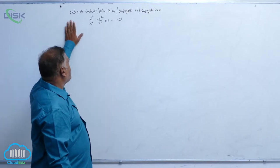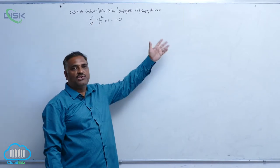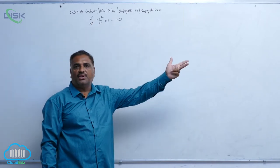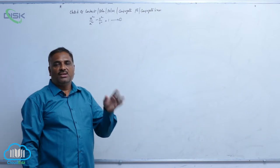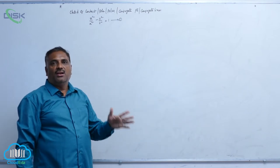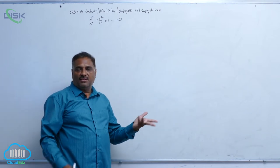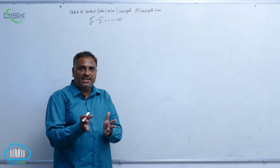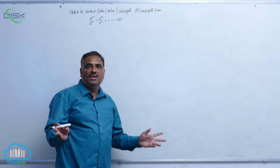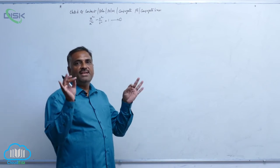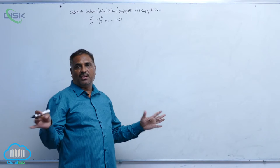We'll discuss chord of contact, pole, polar, conjugate points, and conjugate lines without any proof. Straight away, in the case of an ellipse, the difference between ellipse and hyperbola is only that b square is replaced by minus b square.